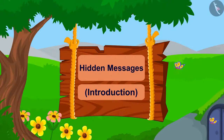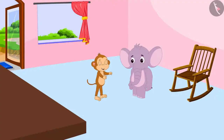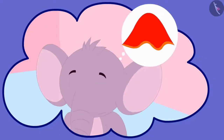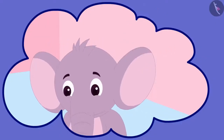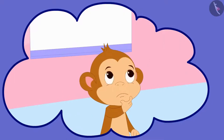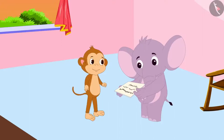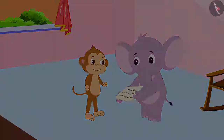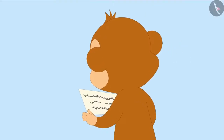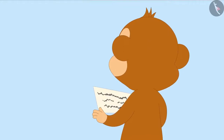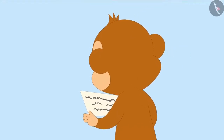In this video, we will learn about hidden messages. Appu and Baban are playing a game. Appu has hidden an object and Baban has to find that object. Appu has written some letters for Baban, and Baban will find clues from those letters to find the object.